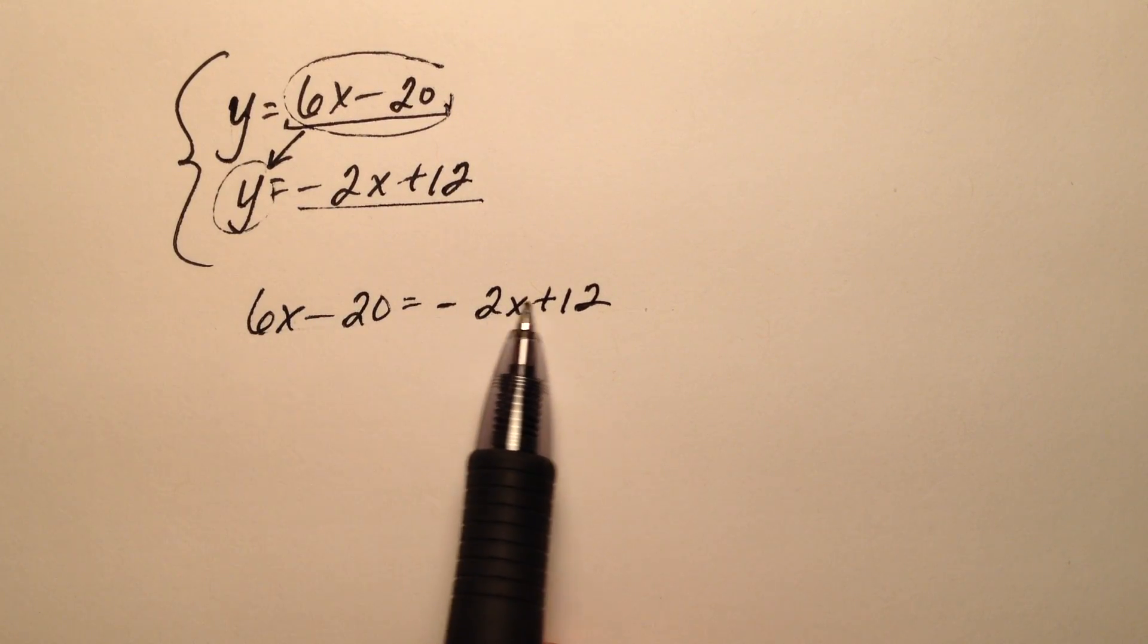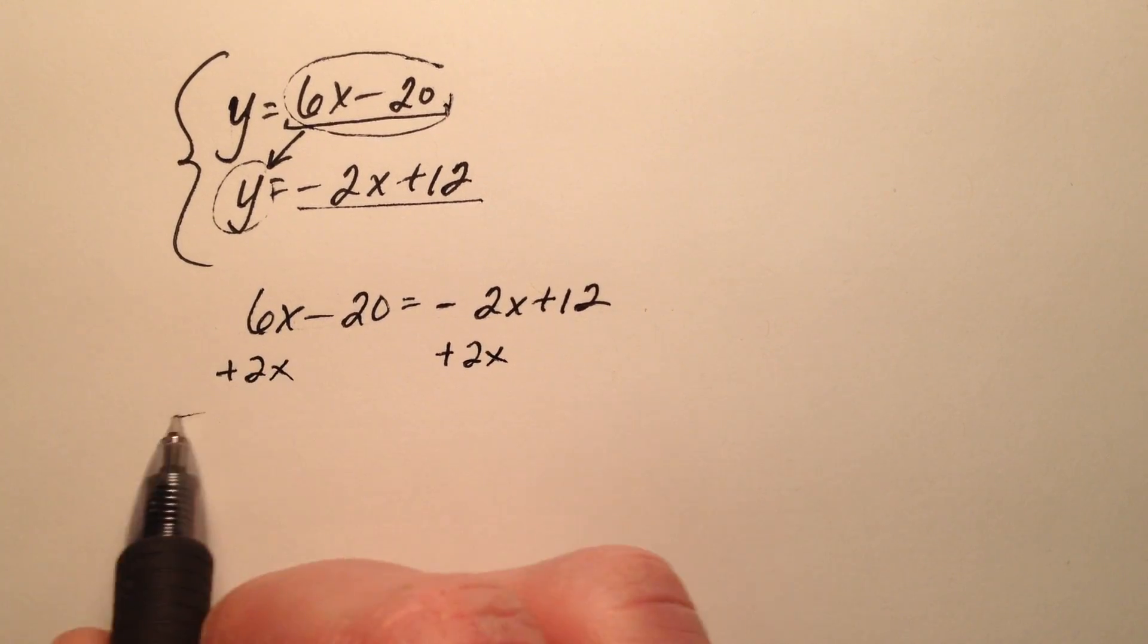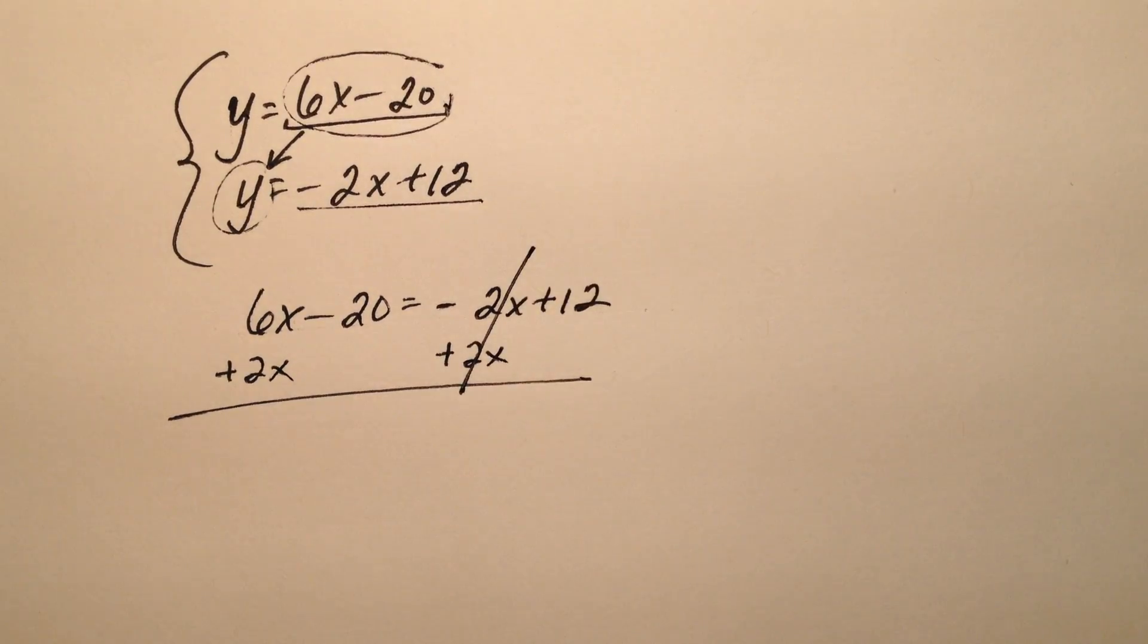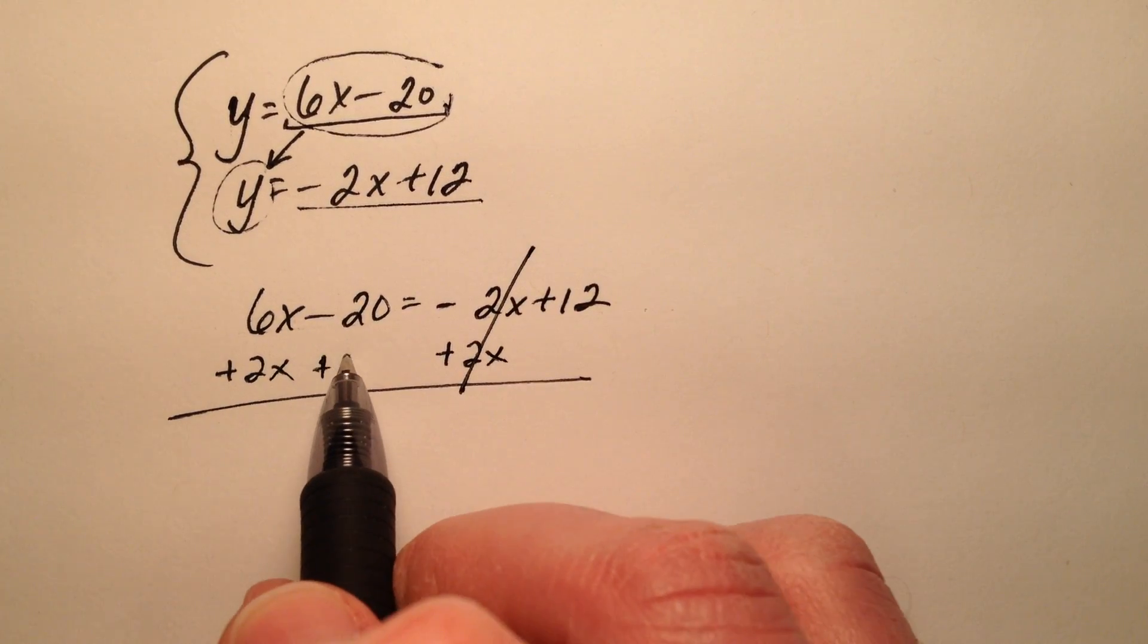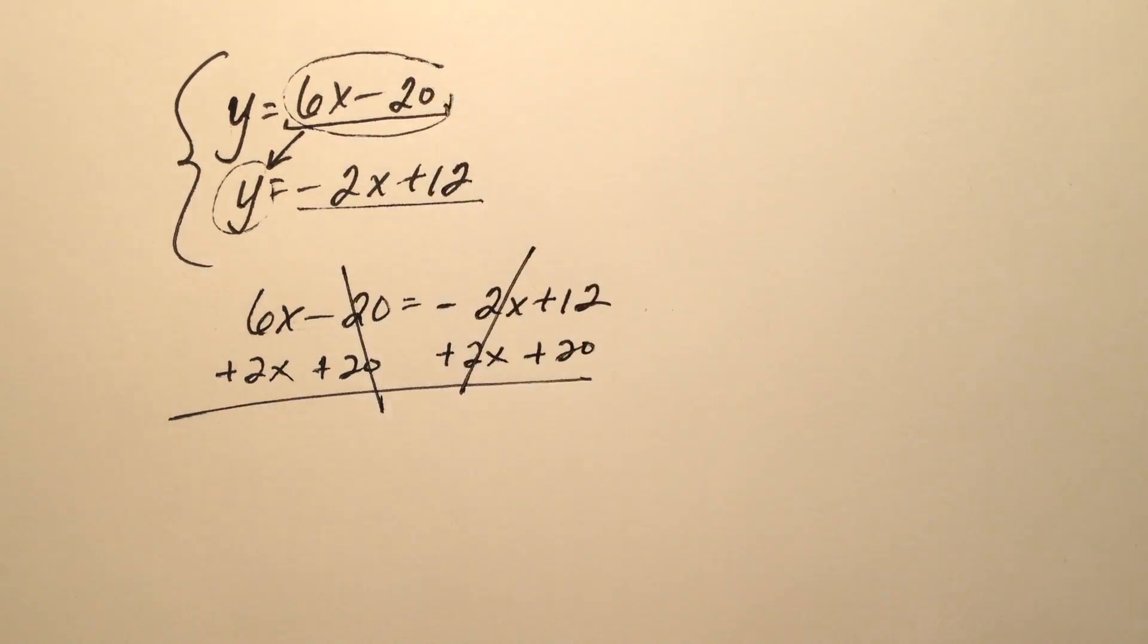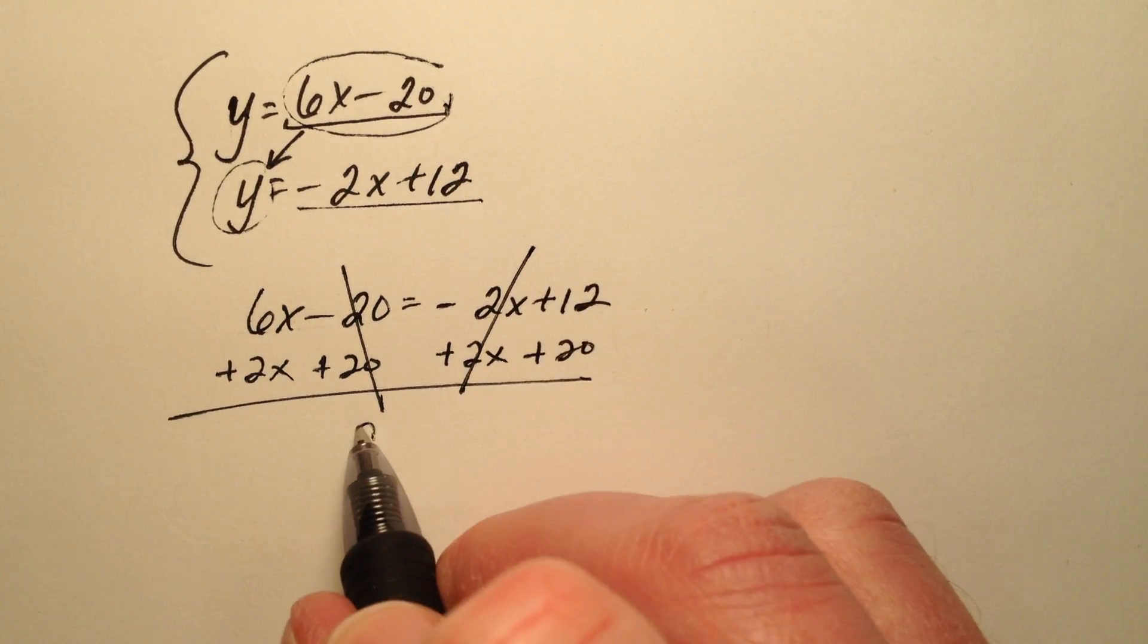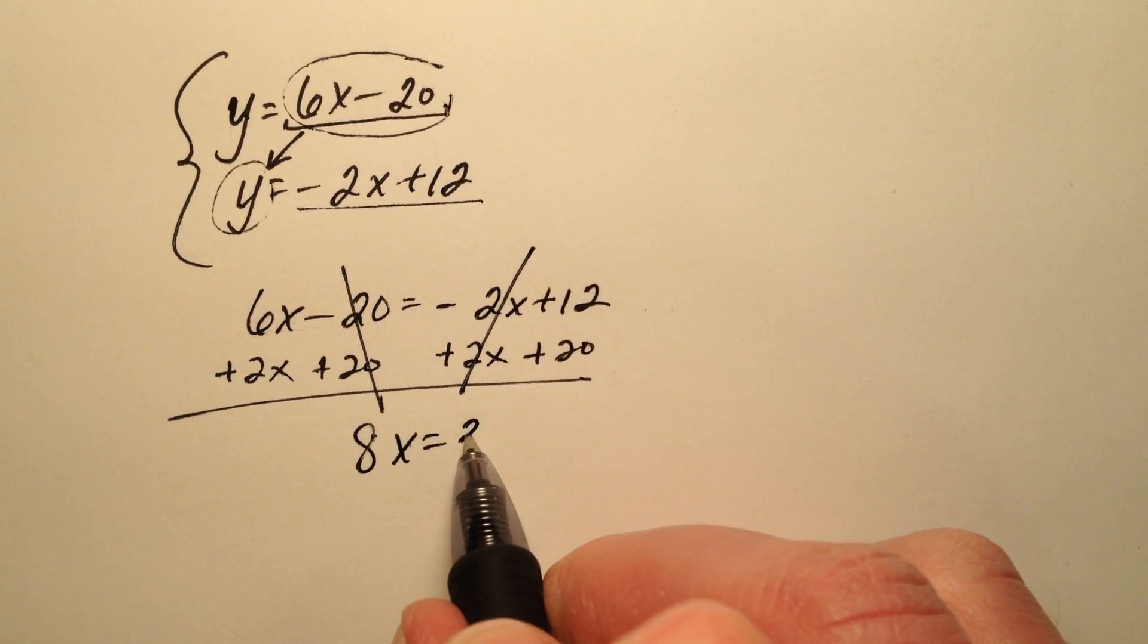So I can go ahead and solve this equation. I'm going to add 2x to both sides to eliminate the x's from the right and add 20 to both sides to eliminate the constants from the left. So when I add all these up, I have 8x equals 32.